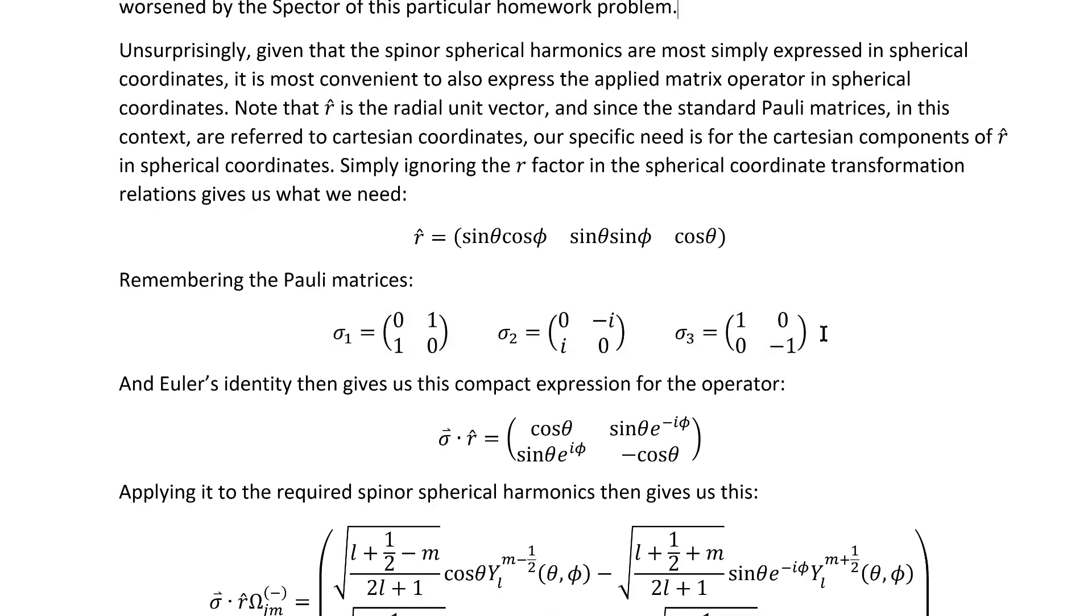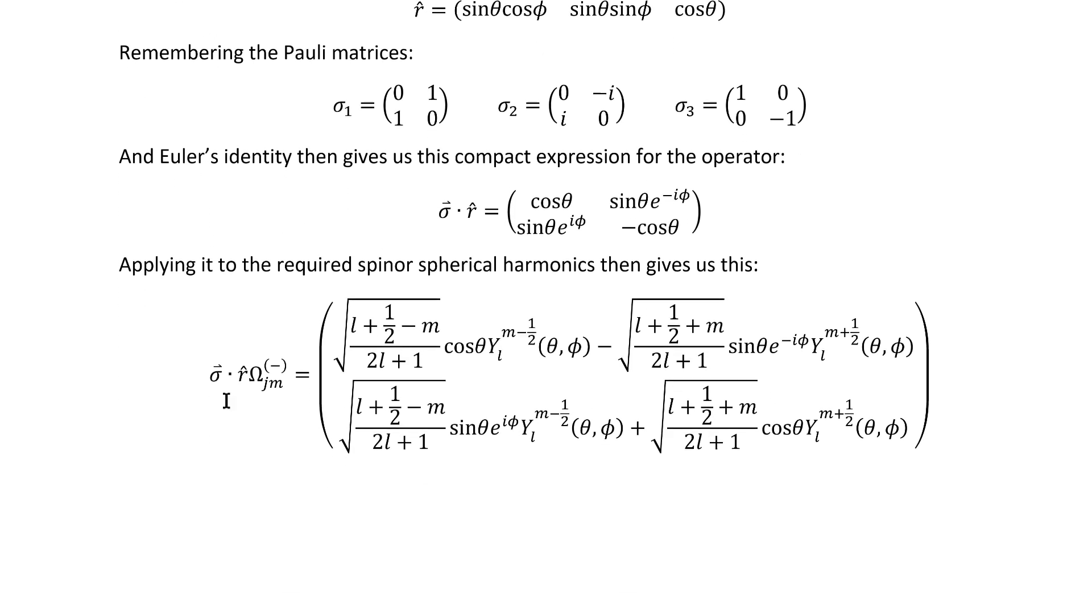These are, of course, the Pauli matrices. Plugging all that in to the dot product that we need to evaluate, and remembering Euler's identity gets us here. We can then apply that to the spherical harmonics we're starting with.